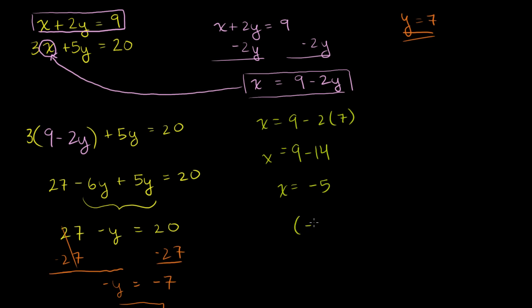The point x = -5, y = 7 satisfies both equations. Negative 5 plus 2 times 7 is negative 5 plus 14, which is indeed 9. And 3 times negative 5 is negative 15, plus 5 times 7 is 35 — negative 15 plus 35 is indeed 20. So this satisfies both equations. If you were to graph both lines, they would intersect at the point (-5, 7).